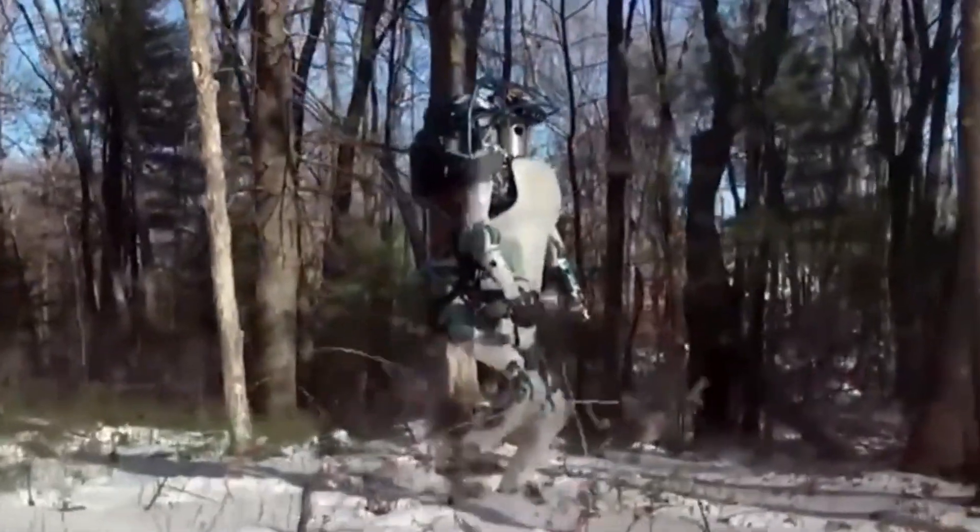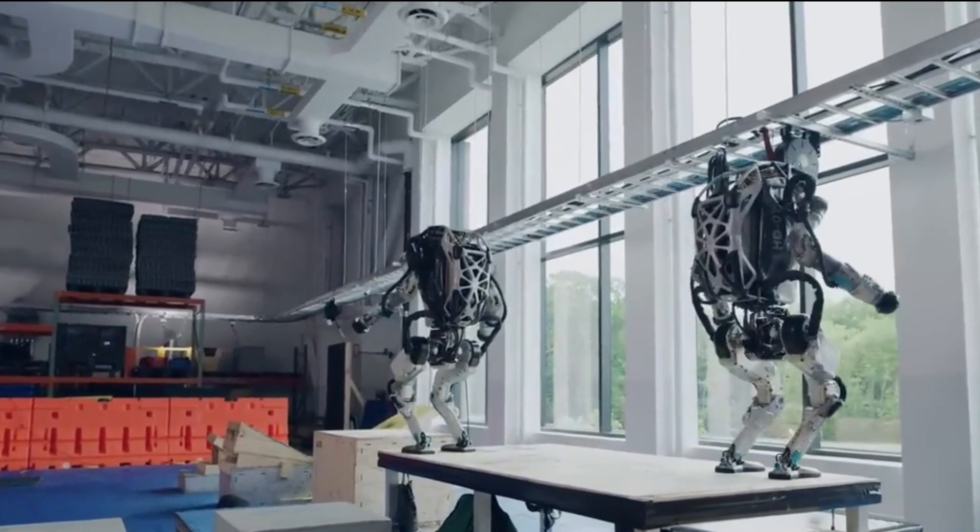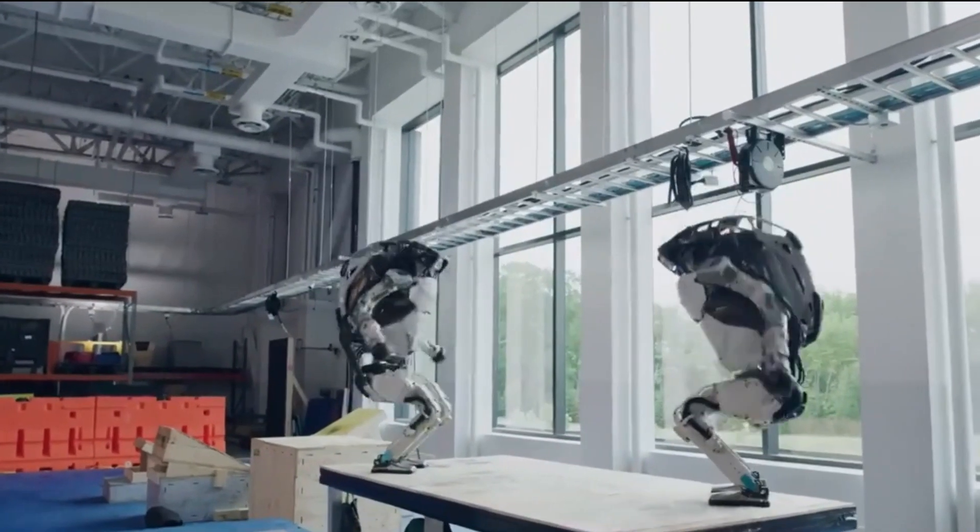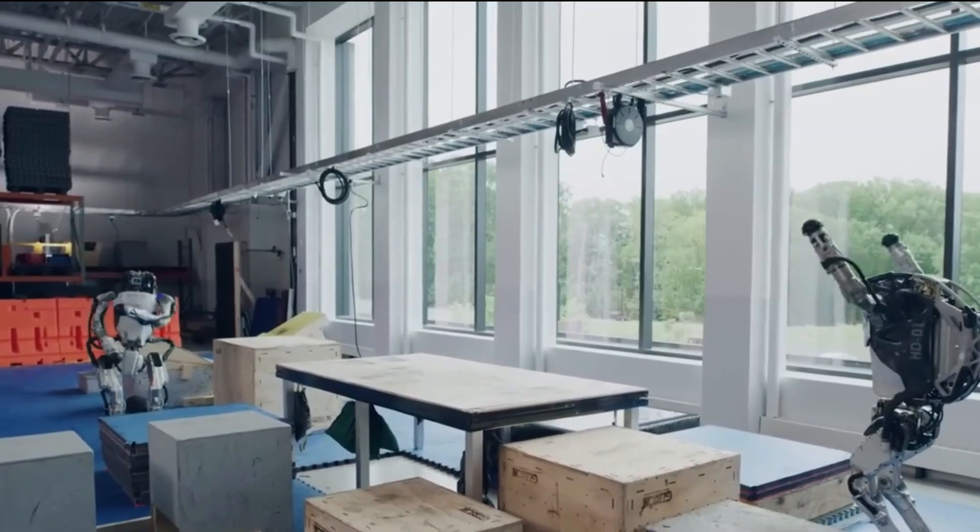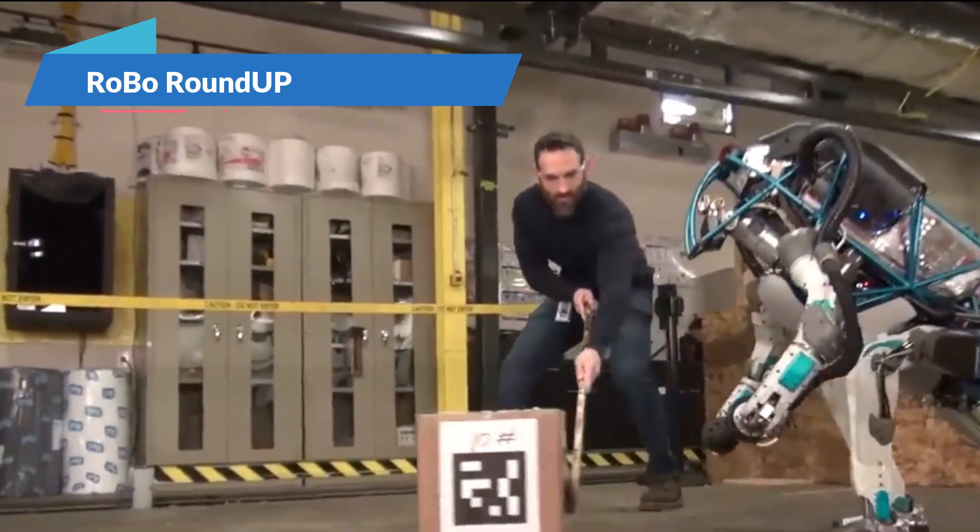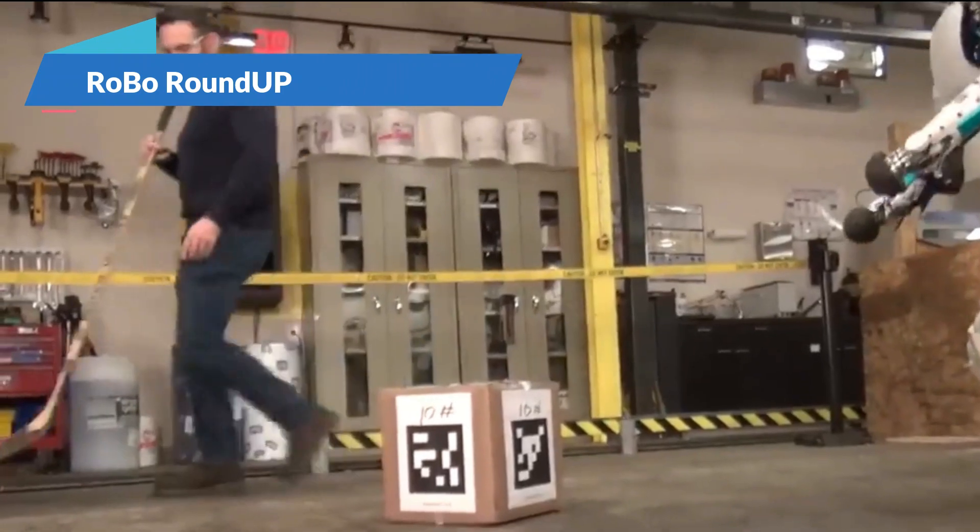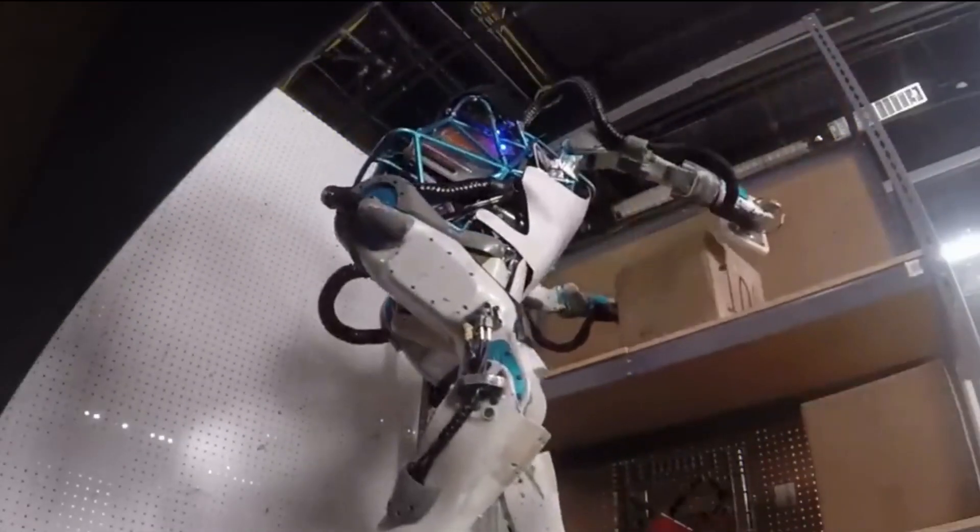In the most recent update to Atlas, the bipedal robot was given claw grippers that allowed it to manipulate objects in its surroundings. The claw grippers use one fixed finger and one moving finger in order to simulate the grip of a hand.